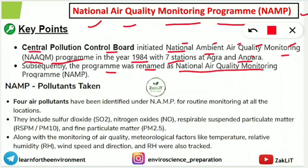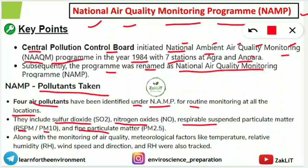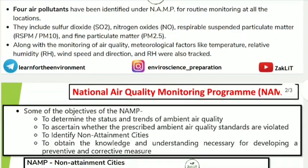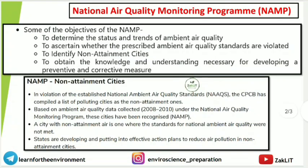Four air pollutants have been identified under the NAMP program for routine monitoring at all locations: sulfur dioxide (SO₂), nitrogen oxides (NOx), respirable suspended particulate matter (RSPM or PM10), and fine particulate matter (PM2.5). Along with air quality monitoring, meteorological factors like temperature, relative humidity, wind speed, and wind direction are also tracked in this program.